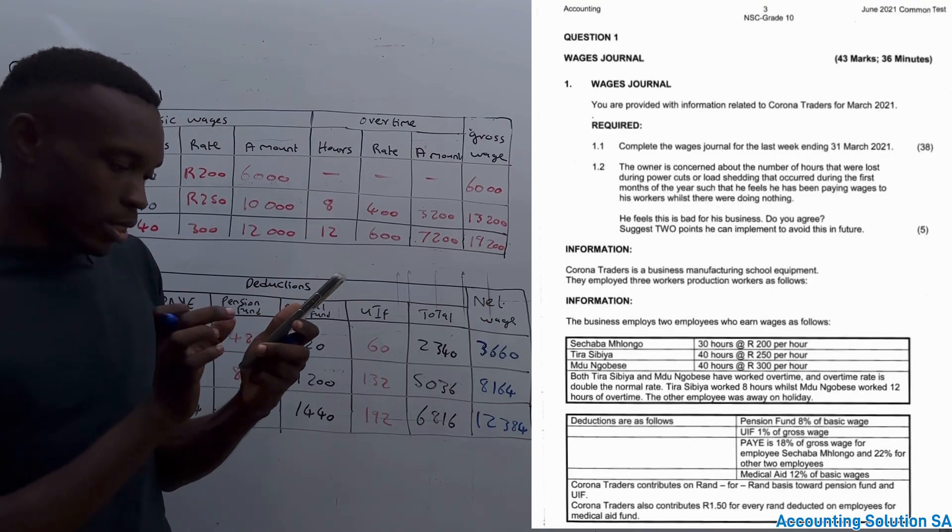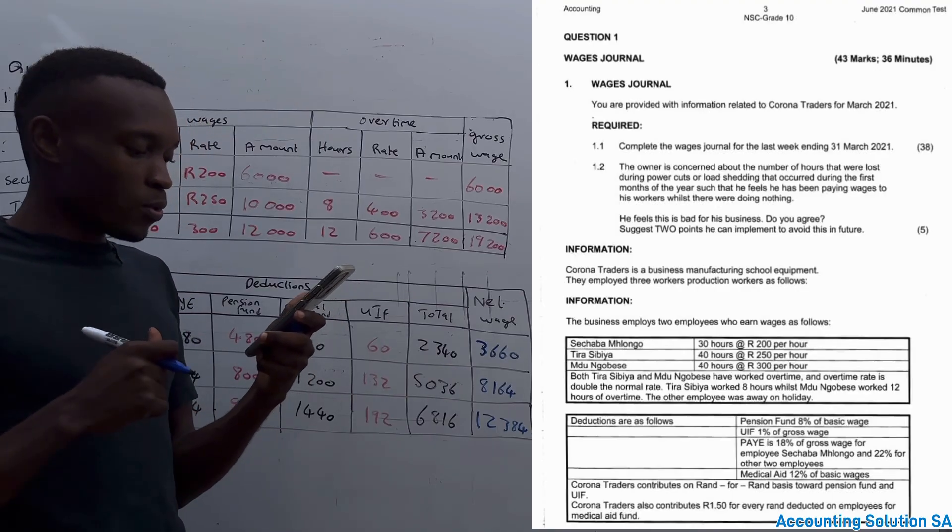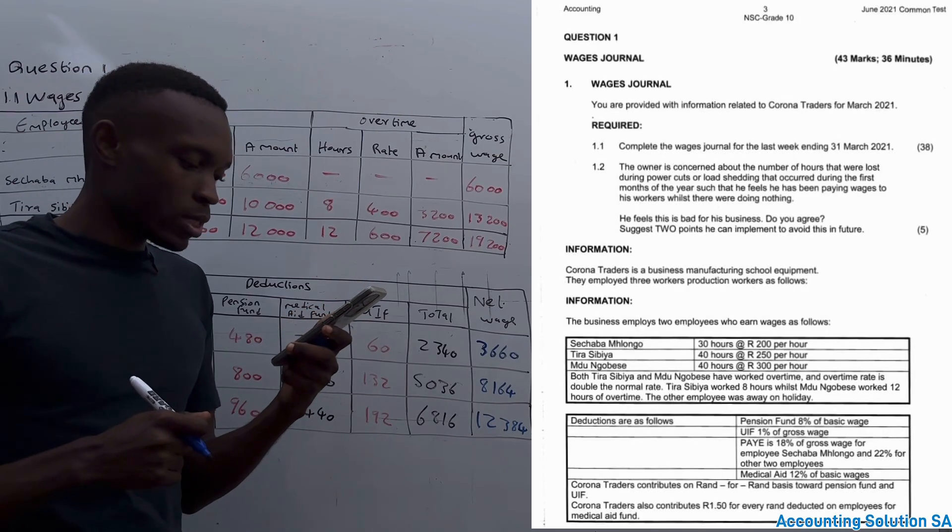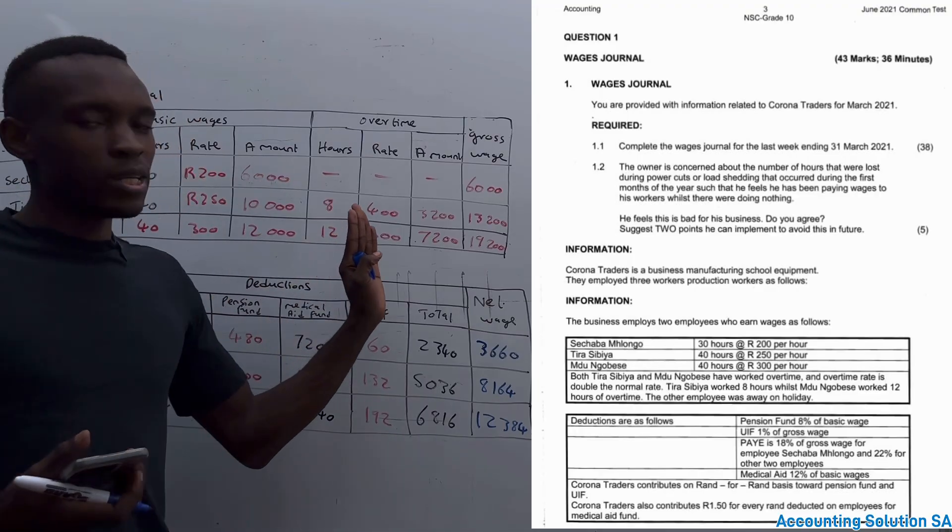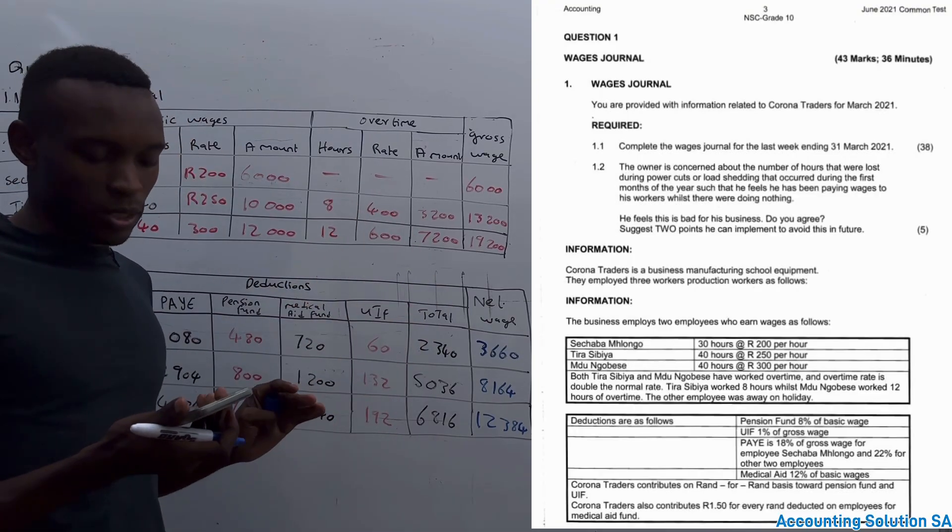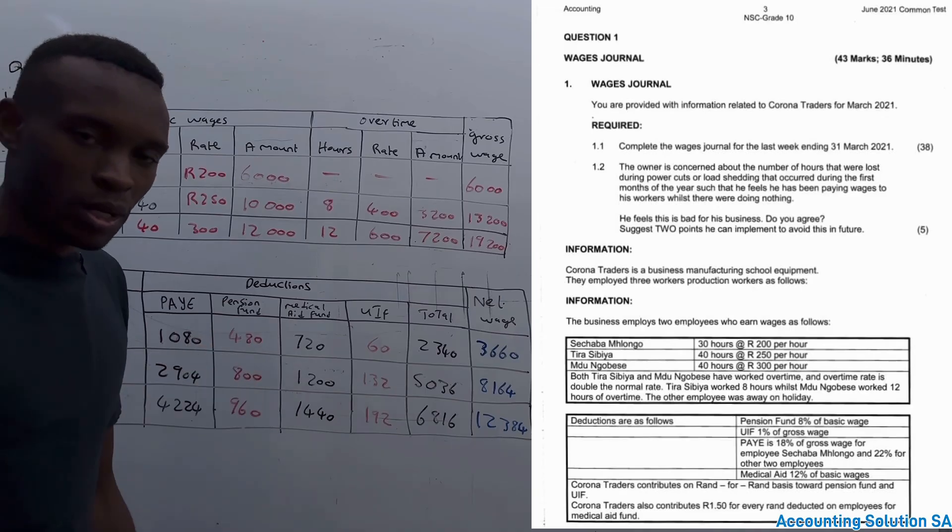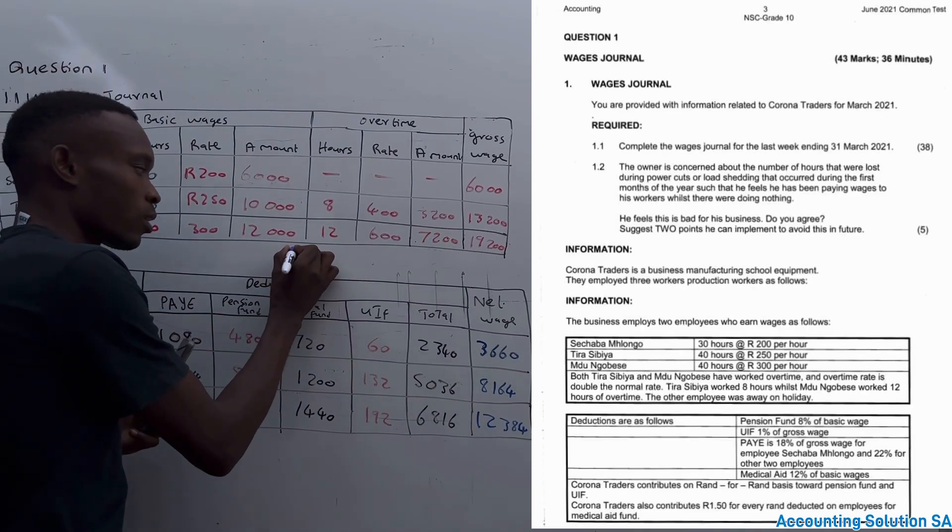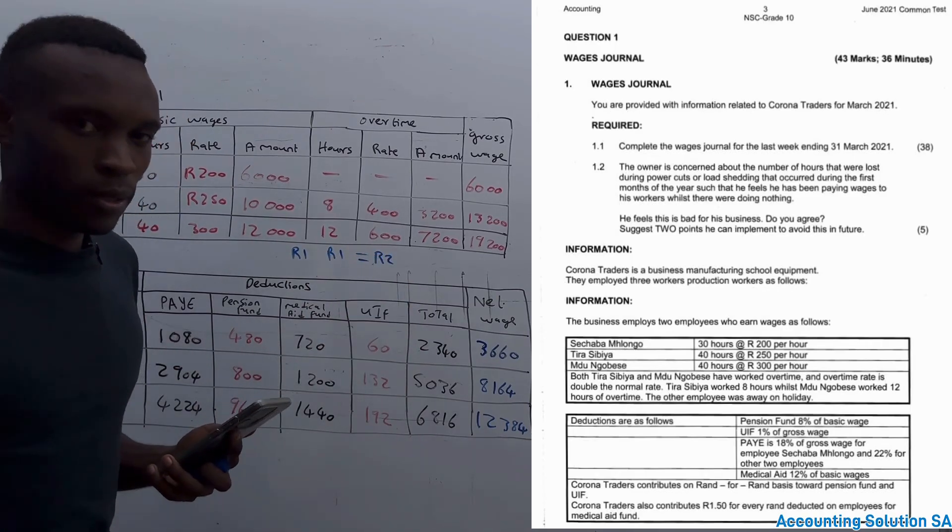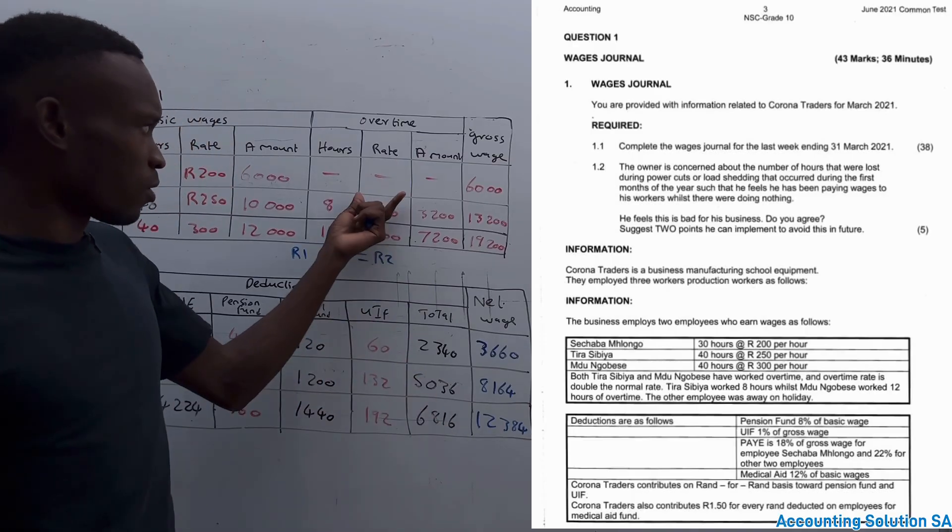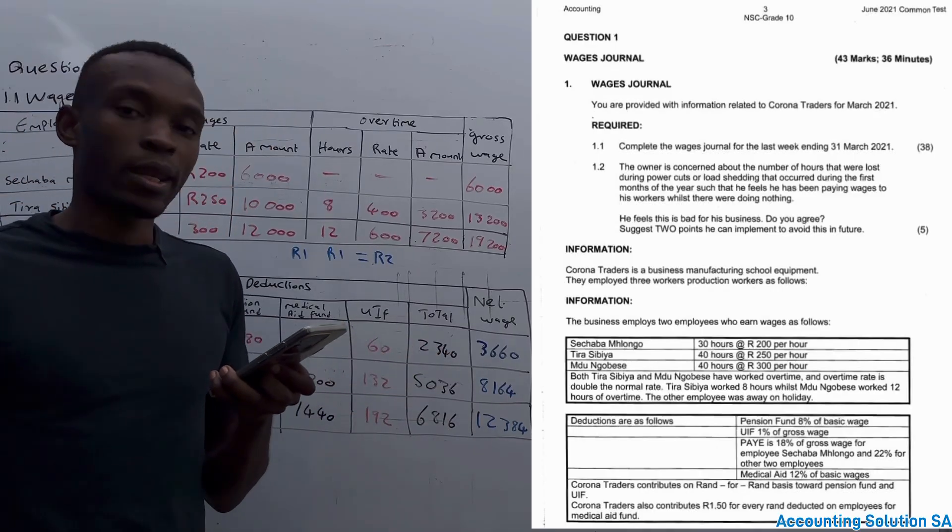Let's read the last part. They say Corona Traders contribute 100% - contribute on rand for rand basis towards pension and UIF. So as you can see in this question, we were not given any contribution column to calculate, which means that there was no need to do this calculation of rand to rand. Rand to rand is like if employee contributes one rand, even employer is going to contribute one rand, and in total it's going to be two rand. If employee, for example, contributes 400, it's going to double and make it 800, just like that. That's what we call rand to rand.